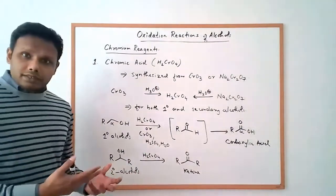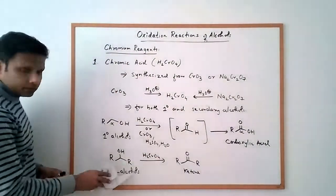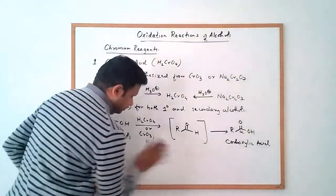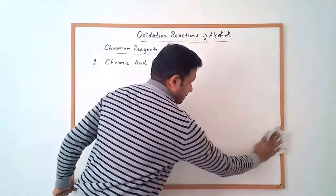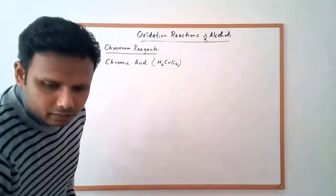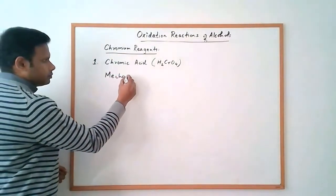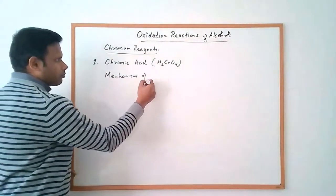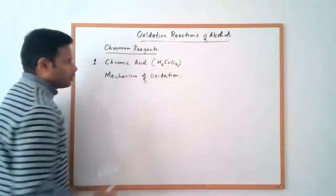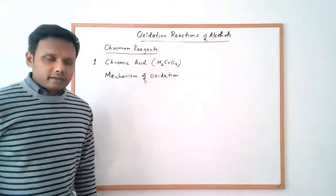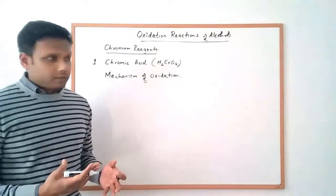So what is the mechanism of this reaction? Let's look at that. We'll use the secondary alcohol as an example. The mechanism of oxidation using chromic acid involves two steps.